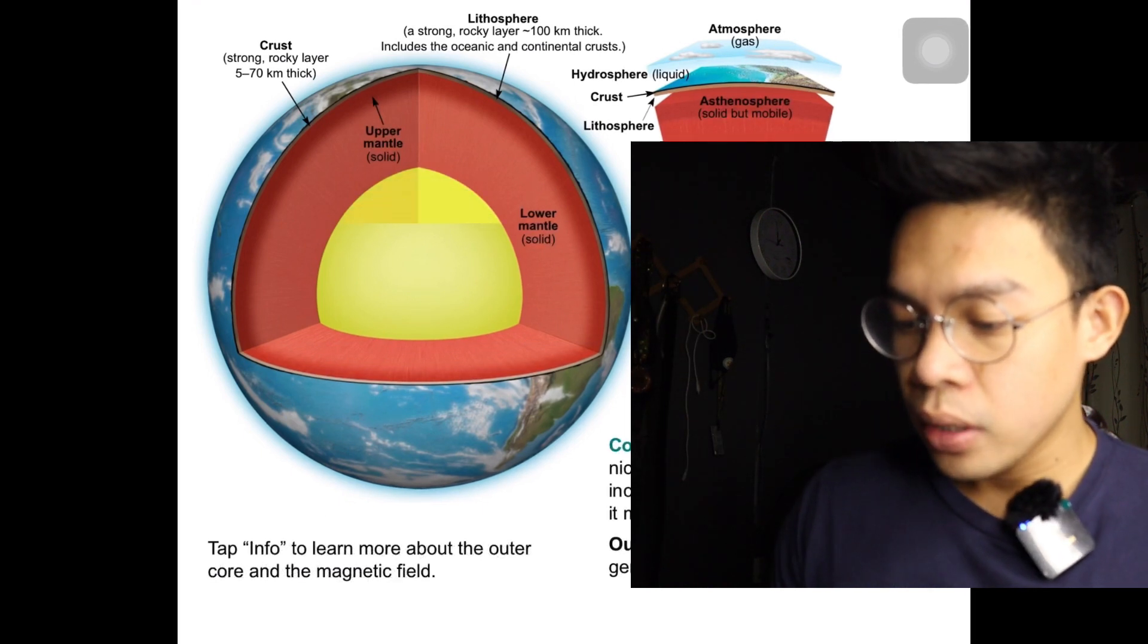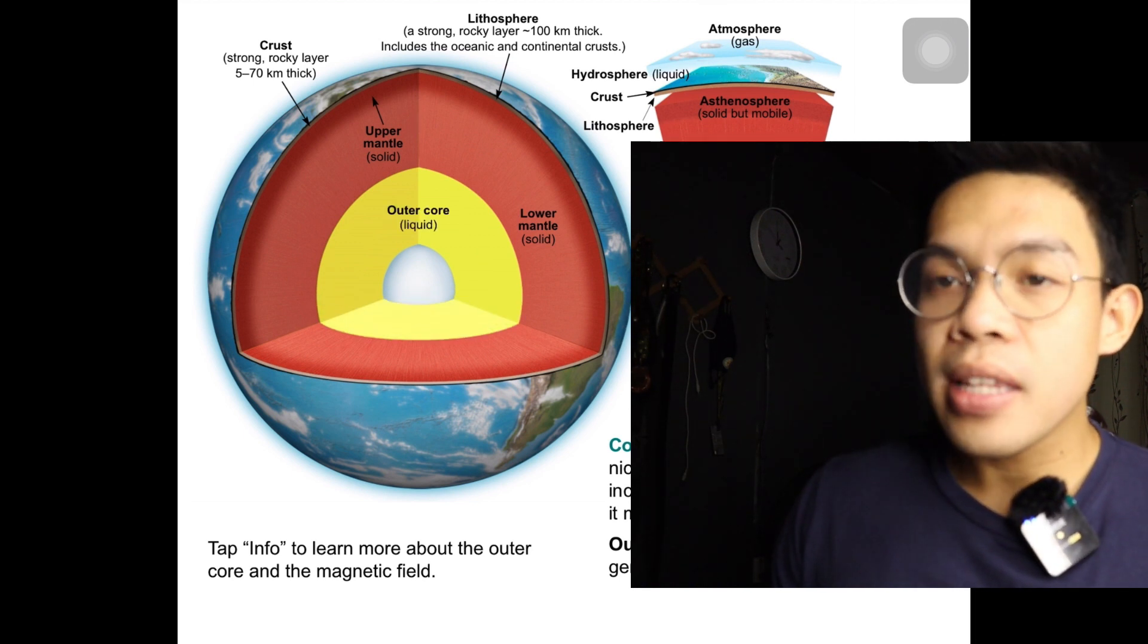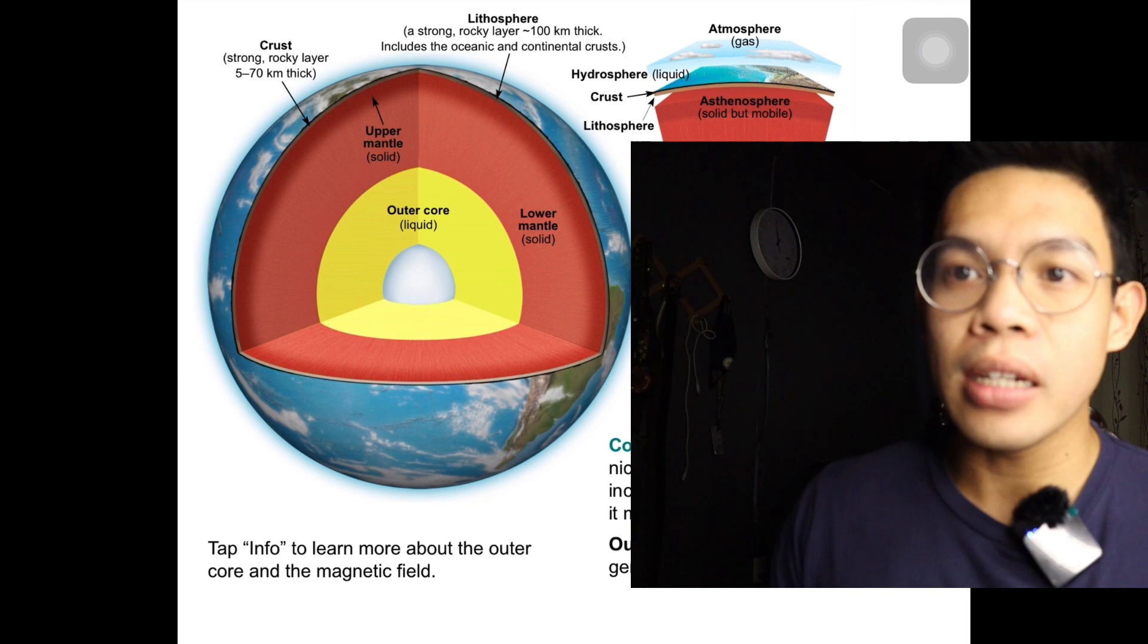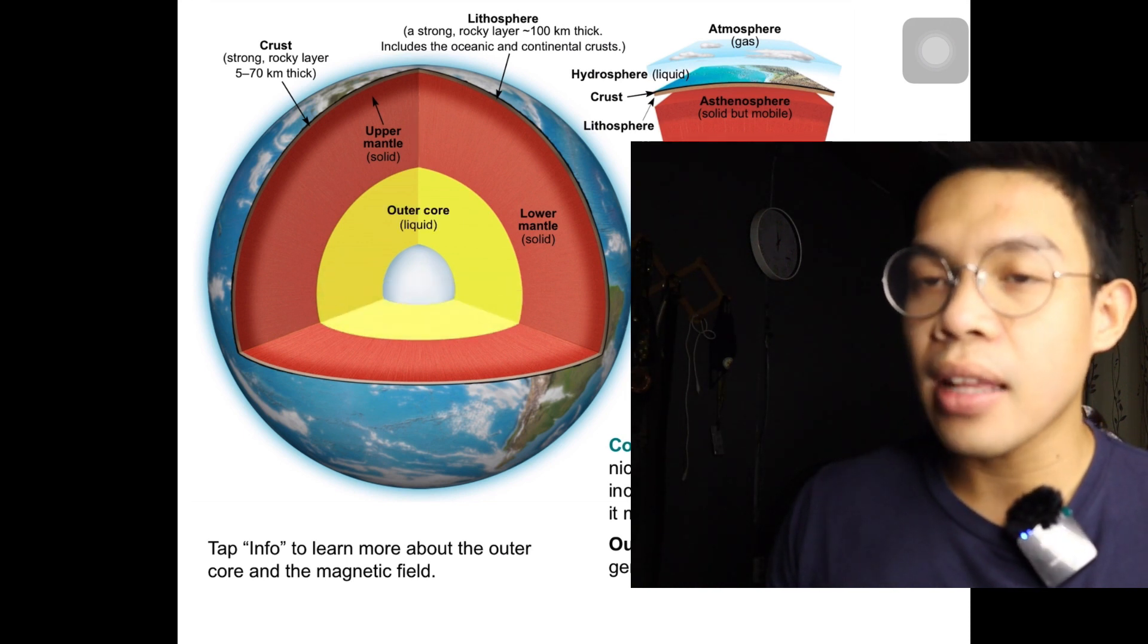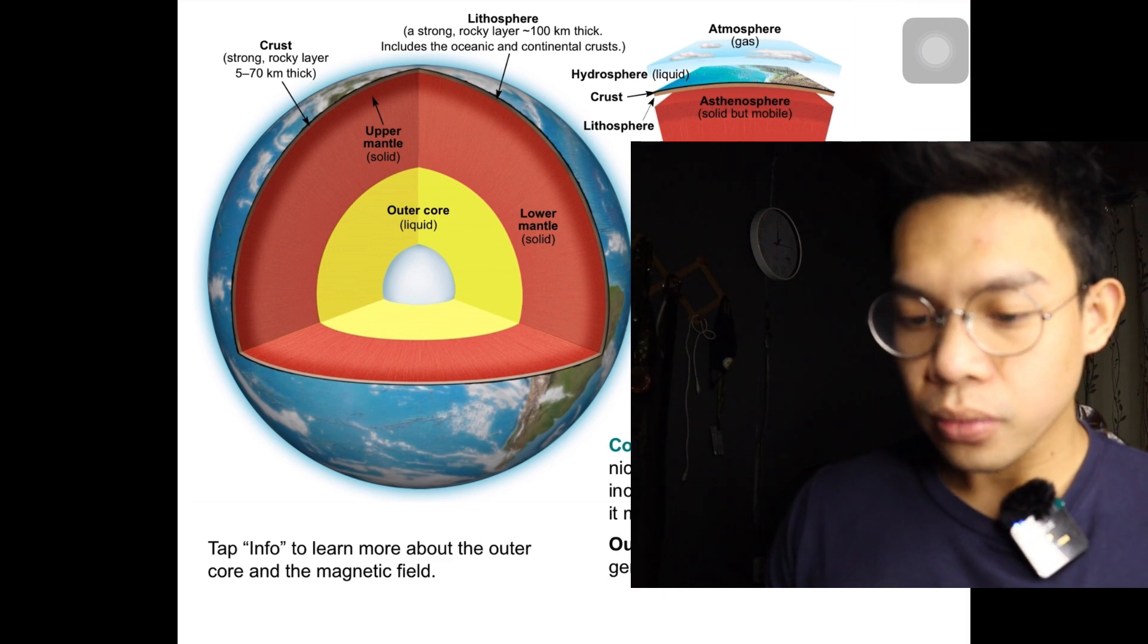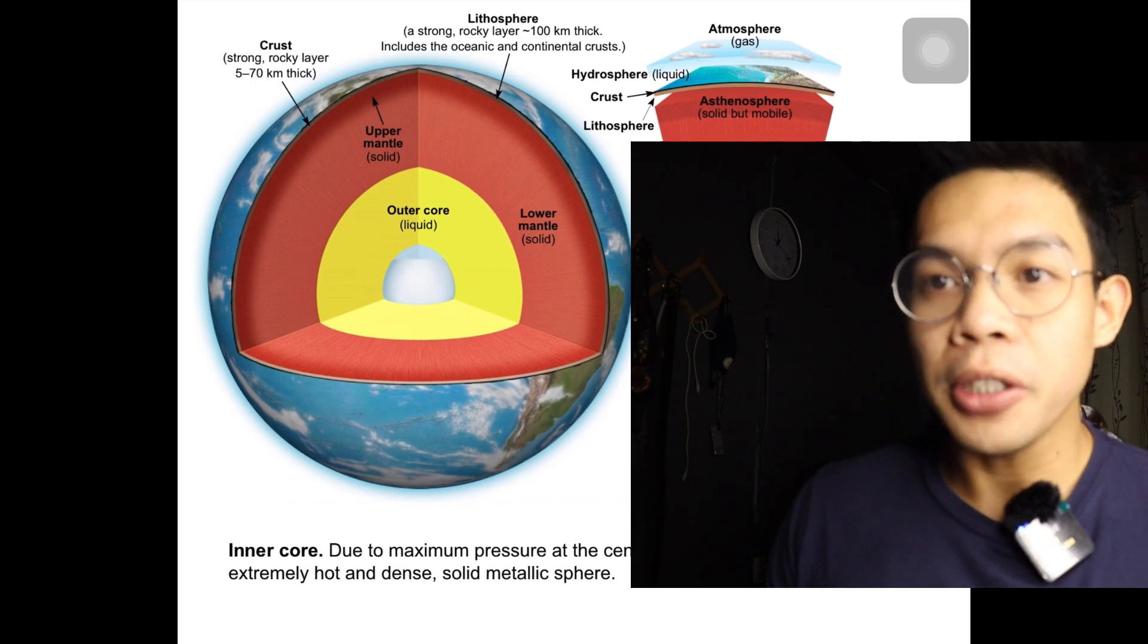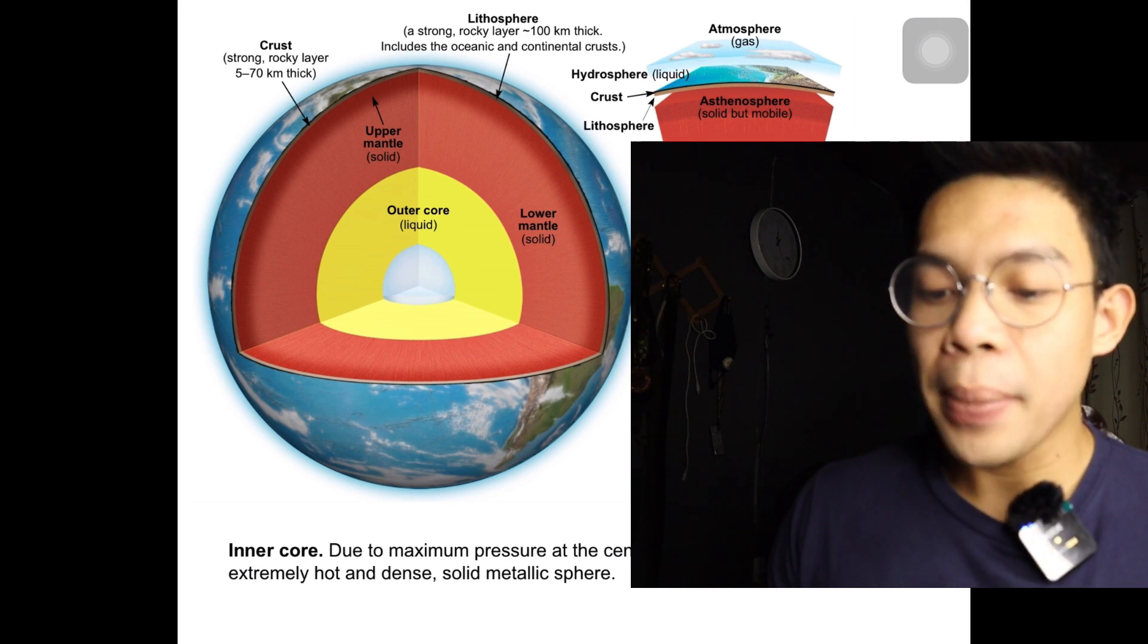The core is composed mainly of iron and nickel. The core's temperature increases toward the Earth's center, where it may exceed 6,000 degrees Celsius (10,832 degrees Fahrenheit). The outer core, a liquid iron-rich layer, generates the Earth's magnetic field. The inner core, due to maximum pressure at the center of the Earth, is an extremely hot and dense solid metallic sphere.